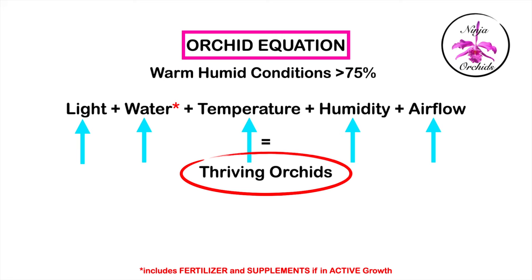Let's look at another equation — cold, humid conditions. In this instance, light can be as high as necessary, water should be reduced while temperatures are low, and humidity is above 70% with less airflow. The risk of not reducing the airflow in these conditions would result in the orchids cooling down below their temperature tolerance. This can also be considered the most risky of conditions, because high humidity combined with low temperatures where airflow is reduced is a breeding ground for fungi and bacteria.